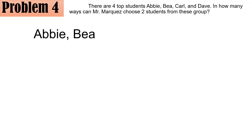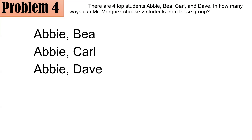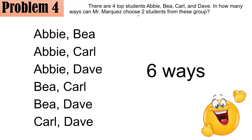Let's list systematically, moving from left to right. Pairings that contain Abby: Abby-Bea, Abby-Carl, Abby-Dave. Then from Bea: Bea-Carl, Bea-Dave. And from Carl: Carl-Dave. We were able to list all possibilities systematically. If you have six, great job — good for you.